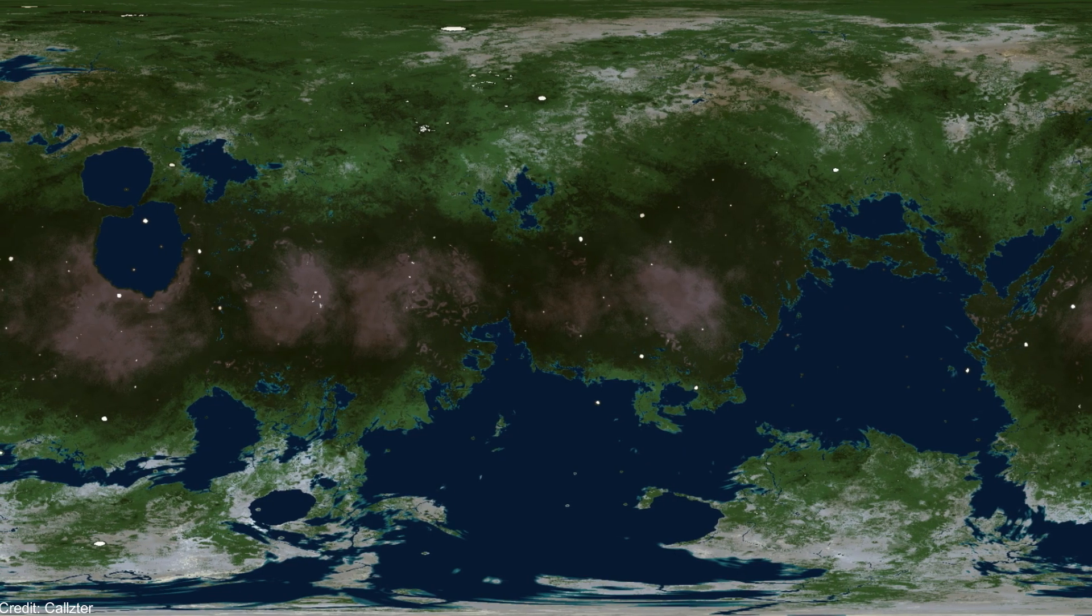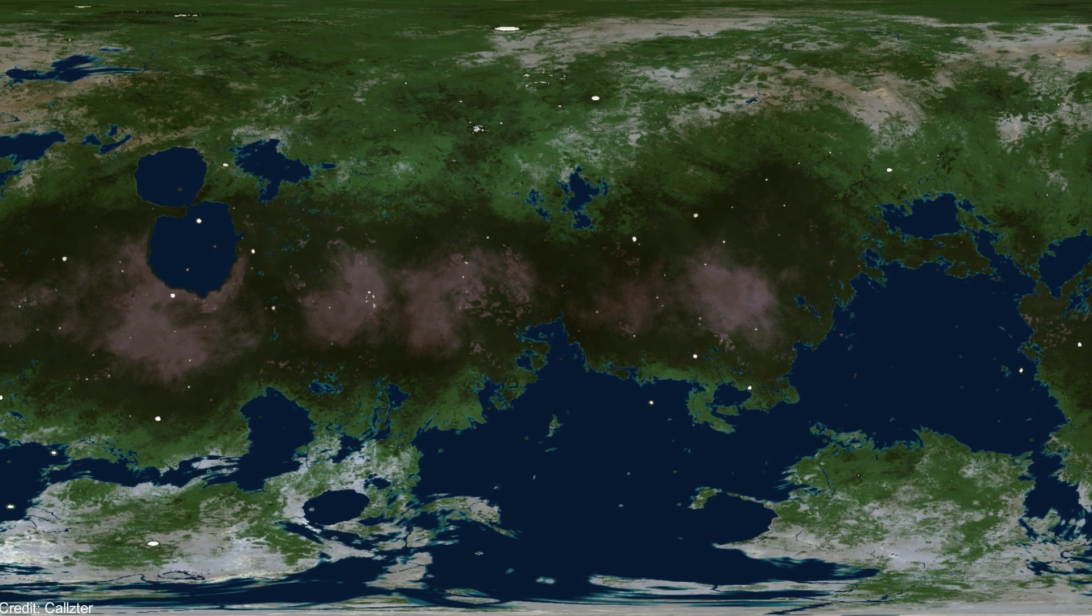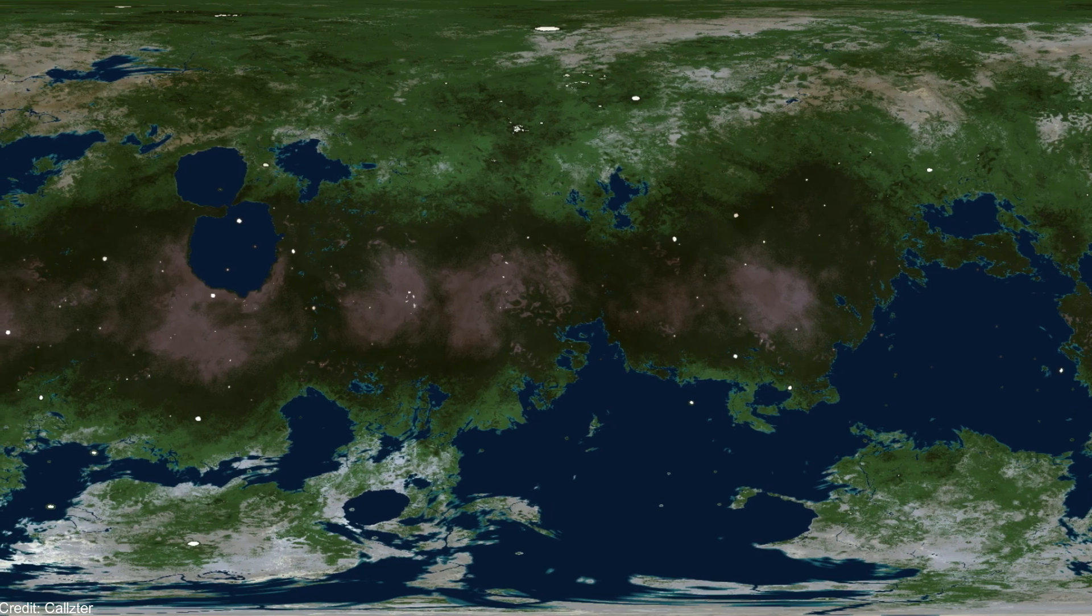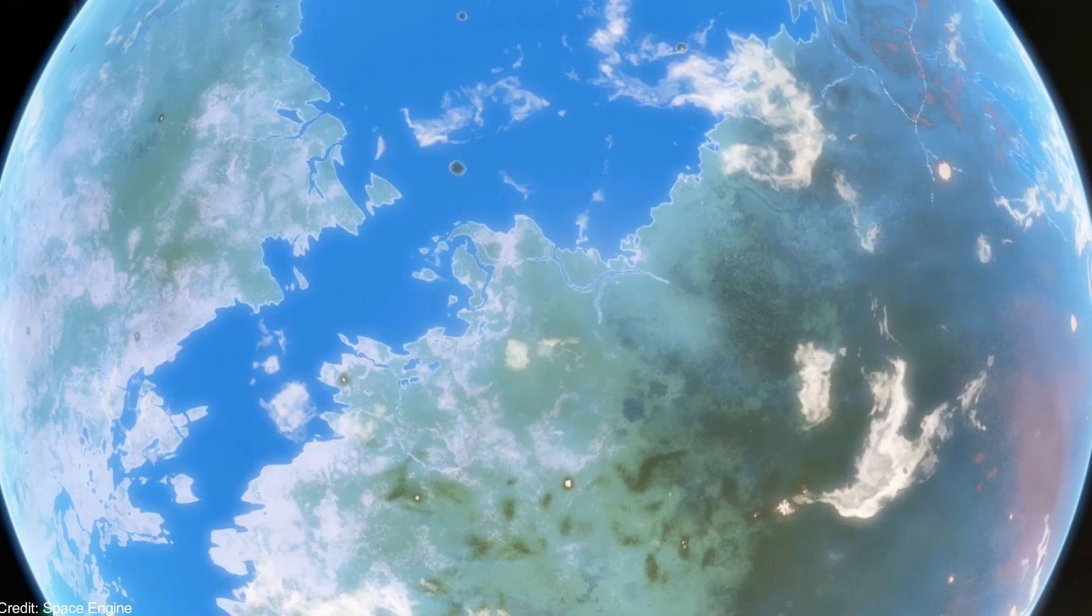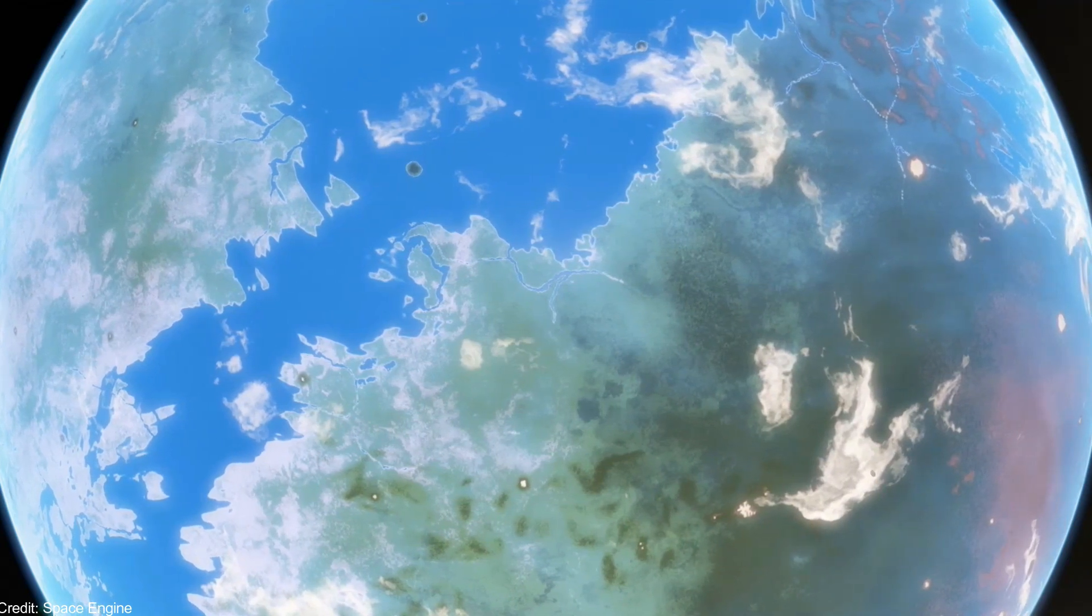Proxima Centauri is a flare star, which means that it sometimes releases flares that could undermine the atmosphere of Proxima b. However, recent studies have suggested that the exoplanet could have a small ocean in the day side.